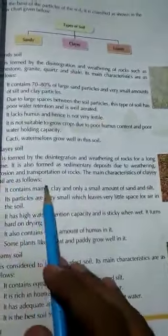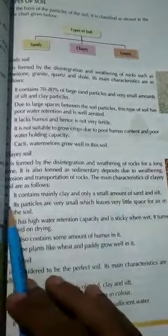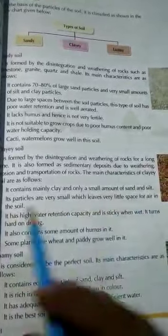Clay soil—mainly clay particles are there and a little bit amount of sand and silt are present. Its particles are very small which leaves very little space for air in the soil. Contains some amount of humus in it.